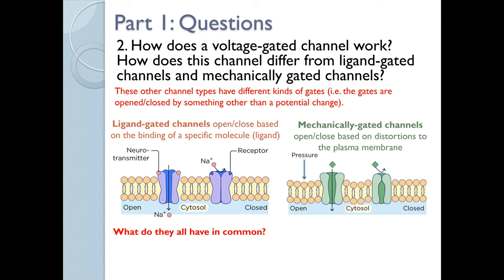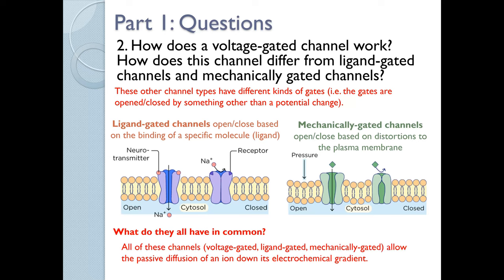A bonus question: what do all three of these types of channels have in common? All of these channels — voltage-gated, ligand-gated, and mechanically-gated — allow for the passive diffusion of an ion down its electrochemical gradient. None of these are active transport; they are all passive transport involving diffusion.